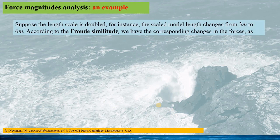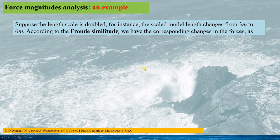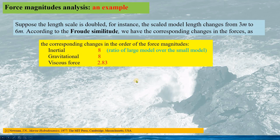Based on the orders of magnitude of the forces, we can see that if we have two different scale models — for instance, 3 metres and 6 metres in length — then according to the relevant similitude, for instance the fluid similitude, we have corresponding changes in the forces: the inertial force would be 8 times that of the large model over the small model, the gravitational force would also be 8 times, but the viscous force would be 2.83 times.